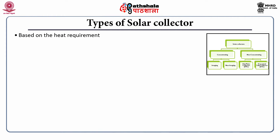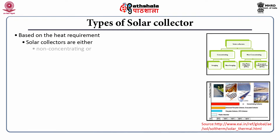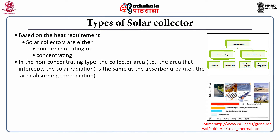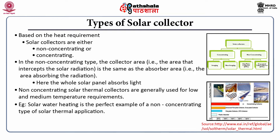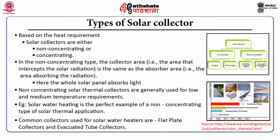Based on heat requirement, solar collectors are either non-concentrating or concentrating. In the non-concentrating type, the collector area — the area that intercepts solar radiation — is the same as the absorber area, meaning the entire solar panel absorbs the light. Concentrating collectors have a larger interceptor than the absorber. Non-concentrating collectors are generally used for low and medium temperature requirements, such as solar water heating.